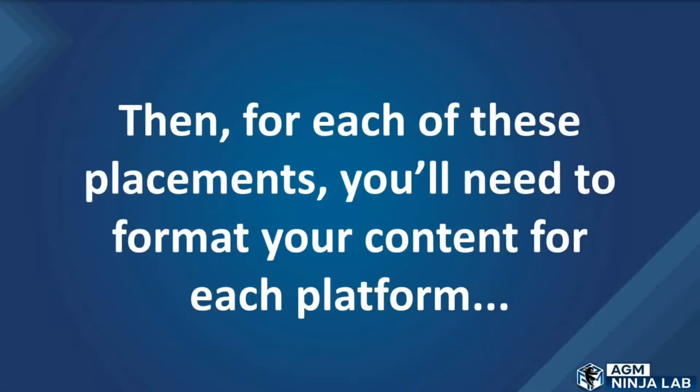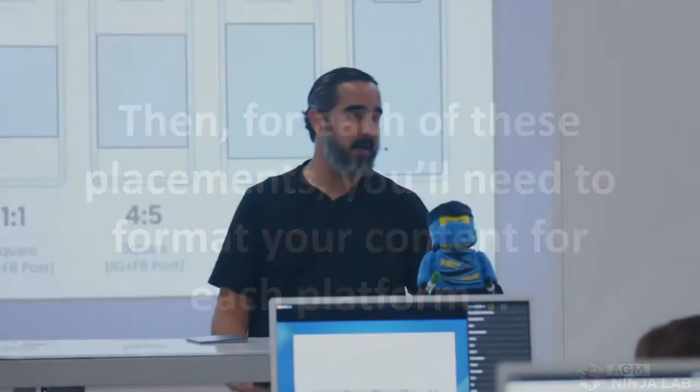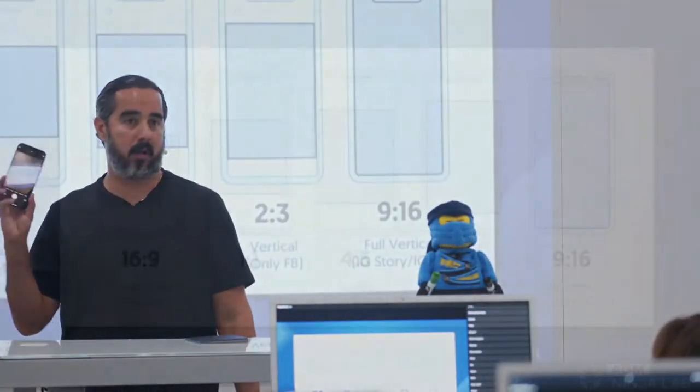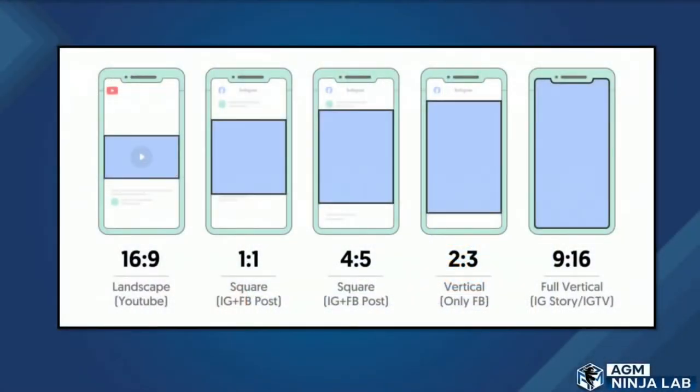YouTube has a format called 16:9. If I grab my phone — this is a cell phone — it records incredibly high quality content. The other day, we actually saw a video on TikTok that went viral of a guy recording with a super high quality cinema camera. Huge device for recording movies, and he had an iPhone alongside it. This one is an iPhone 13. He was recording at the same time and published both videos. They almost look exactly the same — a camera that was $10,000 versus an iPhone.